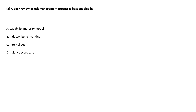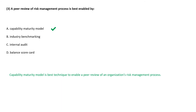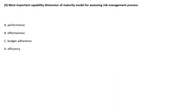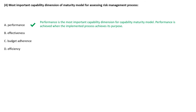A peer review of a risk management process is best enabled by the Capability Maturity Model. The most important capability dimension of the maturity model for assessing the risk management process is performance. Performance is achieved when the implemented process achieves its intended purpose.